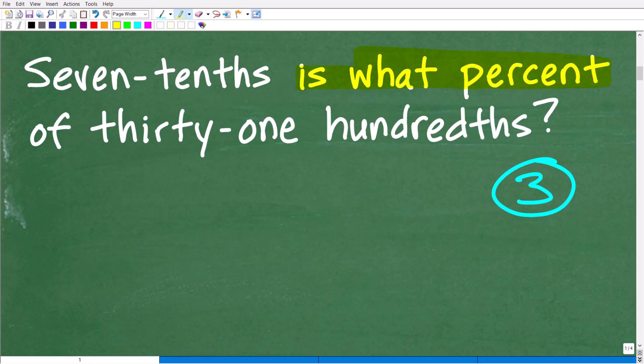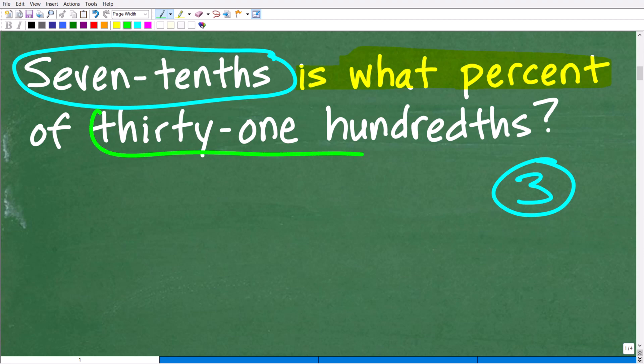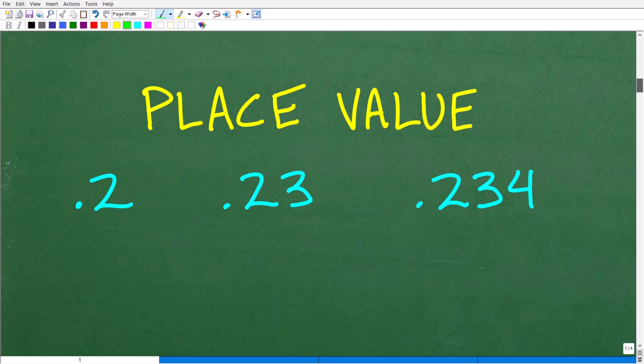So what we're trying to do here is we're trying to determine the percent. If we're trying to find a percent of something, we're going to try to find a percent of two different values, right? One value is seven-tenths and the other value is thirty-one-hundredths. Now the way these numbers, these values are written out can be confusing, especially if you don't remember place value.